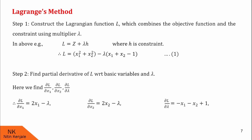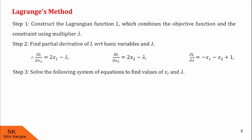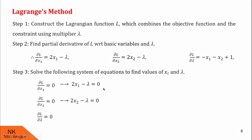After finding these derivatives, we proceed to step 3. In step 3, we solve the system of equations: ∂L/∂x1 = 0, ∂L/∂x2 = 0, and ∂L/∂λ = 0. Substituting the derivatives, we get: 2x1 − λ = 0, 2x2 − λ = 0, and −x1 − x2 + 1 = 0. Simplifying: 2x1 = λ, 2x2 = λ, and x1 + x2 = 1.